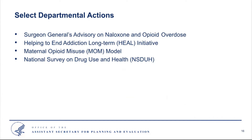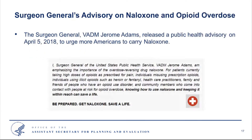Here are four examples of HHS's efforts. Last year, the Surgeon General released a public health advisory urging more Americans to carry naloxone. He highlighted four key populations at increased risk for overdose: those misusing opioids, those with an opioid use disorder, those who have recently experienced an overdose, and those being released from incarceration with a history of opioid misuse. He also noted the elevated risk for patients taking opioids long-term for chronic pain, especially those on higher doses or taking their prescription with alcohol or benzodiazepines.